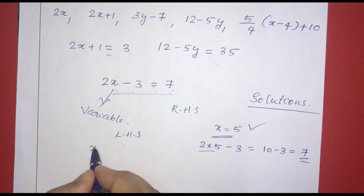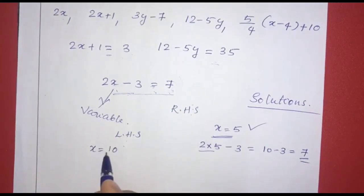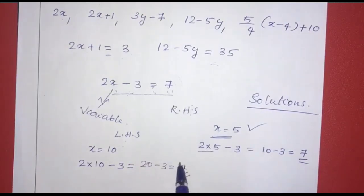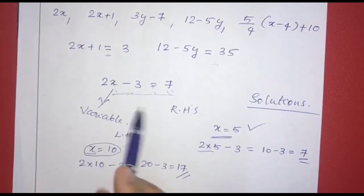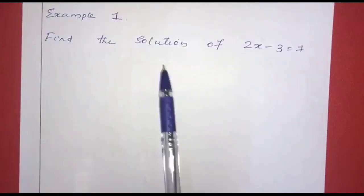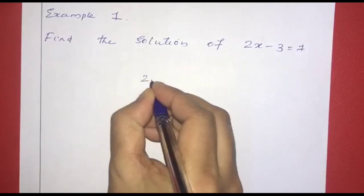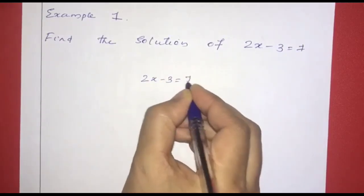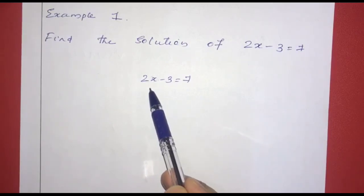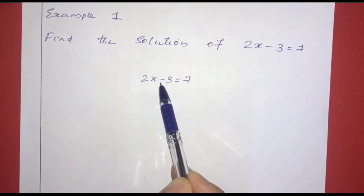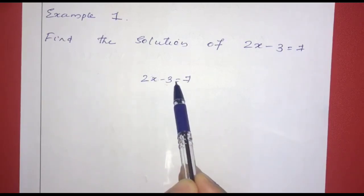Now, if we try another value, x equals 10: 2 into 10 minus 3 equals 20 minus 3 equals 17. We get 17 on the left-hand side, but the right-hand side is 7, so they are not equal. x equals 10 does not satisfy the equation. We will not have equality balance, so x equals 10 is not a solution.